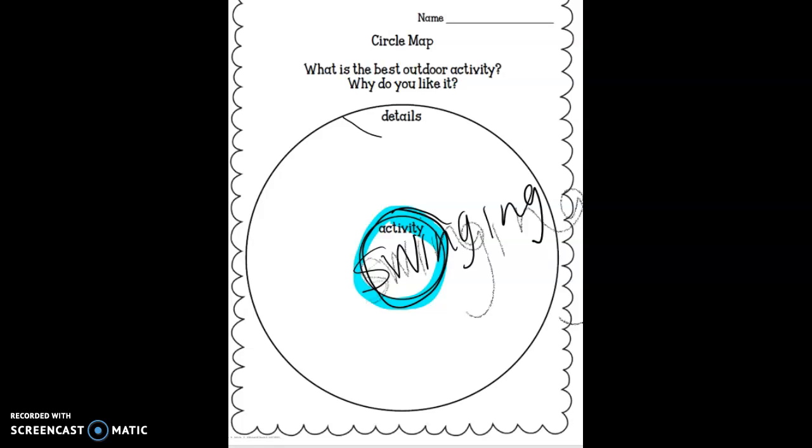Now, this is called brainstorming. And what brainstorming means is you're going to think up as many reasons why you think swinging is the best thing to do outside. So, I'm going to write a few of those. I'm going to say, it's up in the sky. You get to be up in the sky. So, I'd say, be up in the sky.